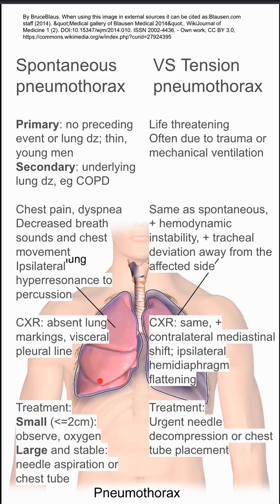The treatment for spontaneous pneumothorax is nothing — just oxygen if it's very small. If it's large, you could do needle aspiration or chest tube placement. In tension pneumothorax, the treatment is urgent, requiring urgent needle decompression or chest tube placement.